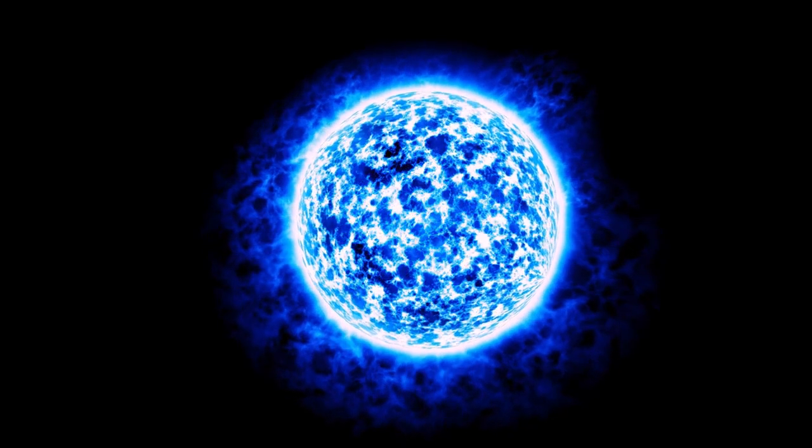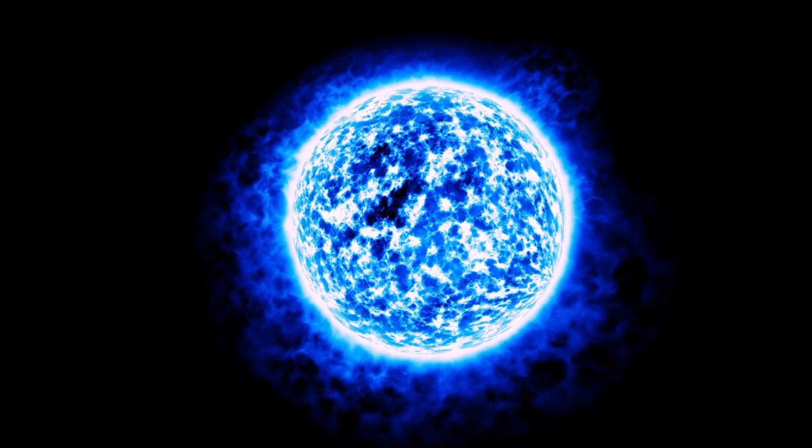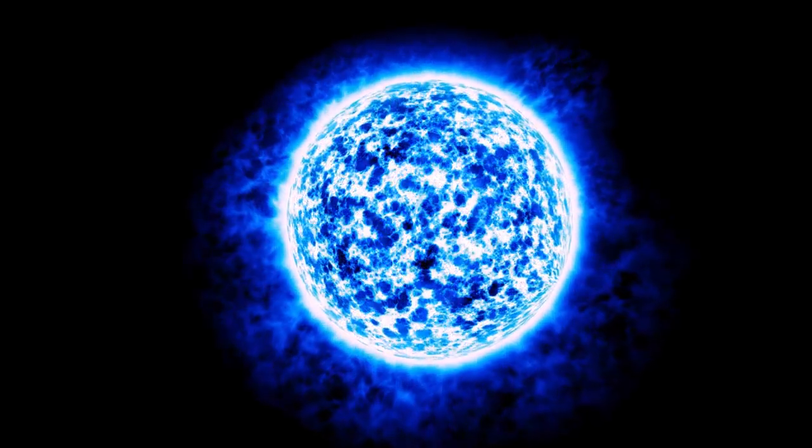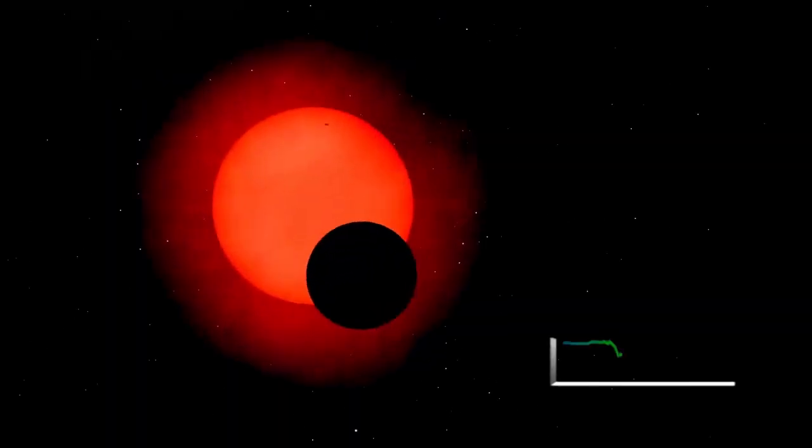This star is classified as a red supergiant, a type of massive star nearing the end of its life. Located around 642 light years from Earth, Betelgeuse is among the largest and brightest stars in our galaxy.